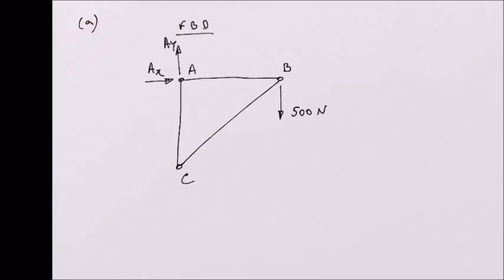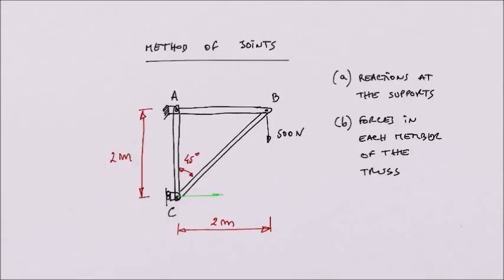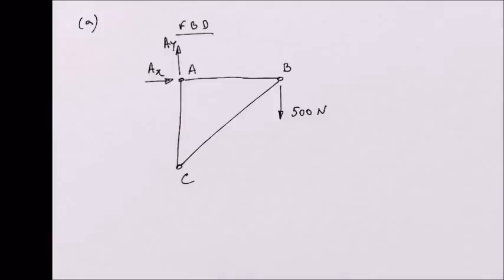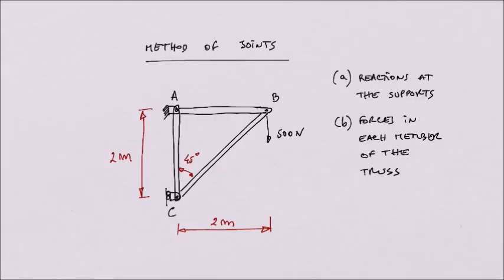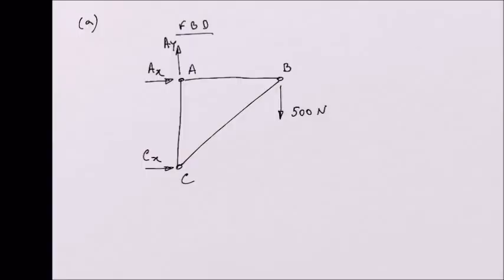We only need to look at reactions at point C. At point C, if I want to move point C in the horizontal direction, this movement is not allowed, so we need a horizontal reaction CX. However, if I want to move point C in the vertical direction, these rollers allow that movement, so there is no vertical reaction at point C. The only reaction at point C is CX.